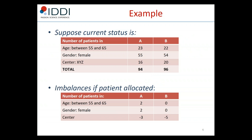A 60-year-old woman is ready to be randomized. Suppose we currently have 94 patients in treatment A — 23 between 55 and 65, 55 women, and 16 at center XYZ — and 96 in treatment B. If the patient were randomized into treatment A, the imbalance in the age group would become 2 (24 in A vs. 22 in B), 2 for women (56 vs. 54), and 3 at the center (17 vs. 20). If assigned to group B, the differences would be 0, 0, and 5.